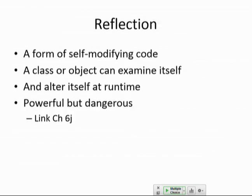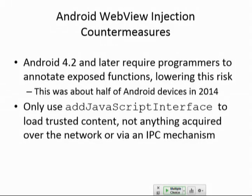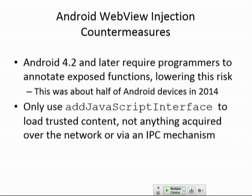Reflection is a form of self-modifying code. Code that alters itself is often a powerful way to do things fast, but it's very dangerous and confusing — you can't print out the code, and it's hard to audit. Reflection is one version of this. This was somewhat ameliorated in 2014 when they added 'addJavaScriptInterface' to load trusted content, rather than using self-modifying code where code reflects back on itself.